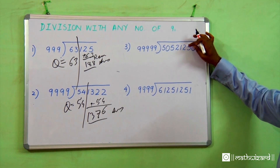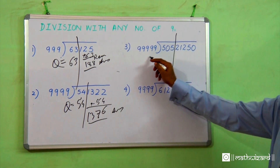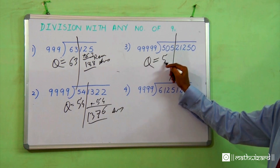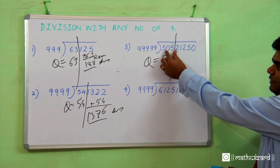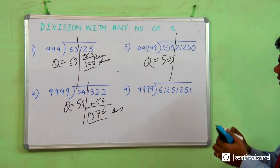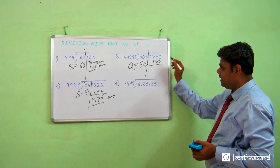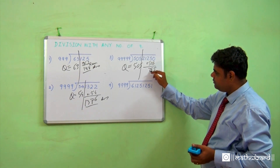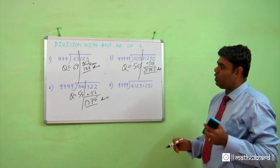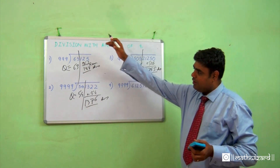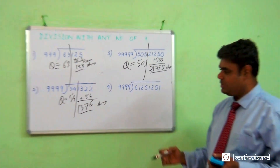Let's do this together. How many nines are there? Five: 1, 2, 3, 4, 5. My quotient works out to 505. I take this 505, put it here and simply add it up, which gives me my remainder. What we are actually doing is taking hundred-thousand, ten-thousand as a base and solving it this way.